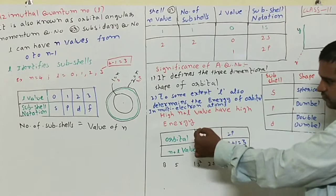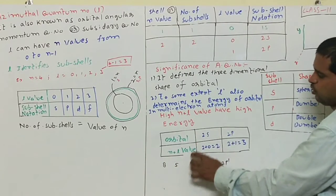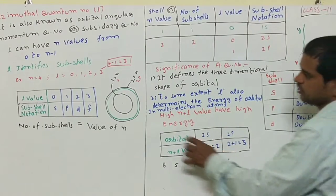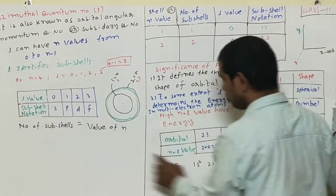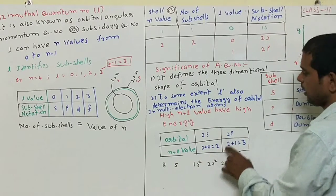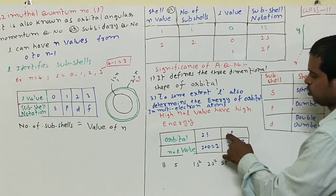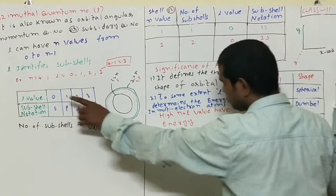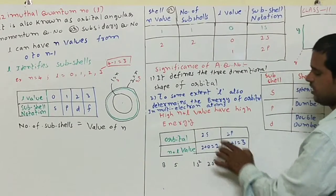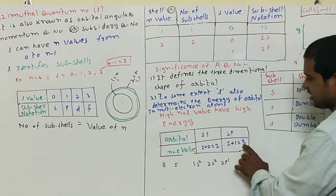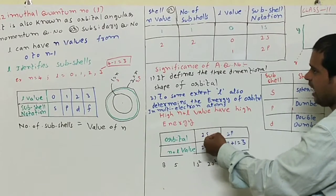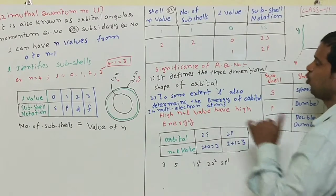We observe it for 2S and 2P orbitals. In case of 2S orbital, N plus L value: N equals 2 and S value from here, S equals 0, so 2 plus 0 equals 2. And in this case here, N equals 2, and P equals, from here, it is P equals 1, so 2 plus 1 equals 3. If we compare, 3 is greater than 2. So 2P is having high energy than 2S.